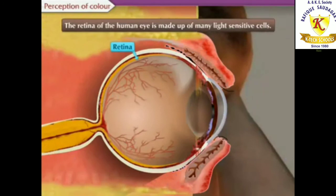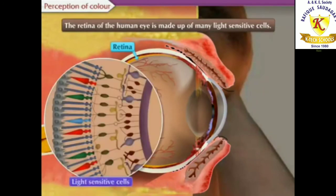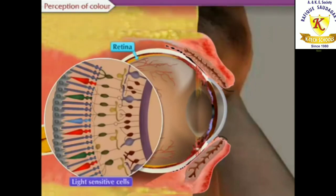Now let us learn perception of color. The retina of the human eye is made up of many light-sensitive cells. These cells are shaped like a rod and like a cone.